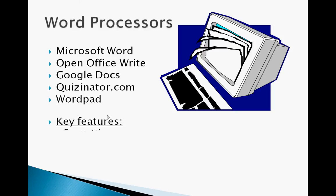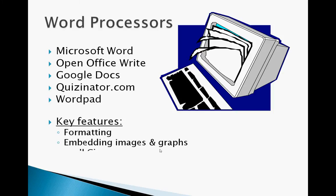Main features of word processing include formatting — you can bold, italic, and change the size of words. You can embed images and graphs into your document to help tell a story. Word processing usually includes spell check so you can fix spelling mistakes. It also typically has mail merge, which lets you use a spreadsheet of addresses and insert them into letters, so instead of writing a thousand letters you write one and mail merge sends it to everyone on your list.